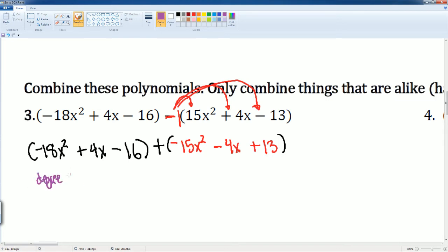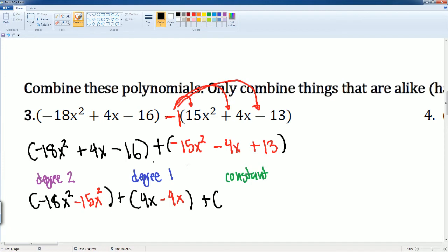So I can just write it here for you. The degree 2's go together. So negative 18x squared and I have a minus 15x squared. Then next we have our degree 1 which is going to be add that with 4x minus 4x. Then you have your constants here and the constants are without the variable. It would be the negative 16 and you have your plus 13. There you go. I put them in the parentheses so you can see it.